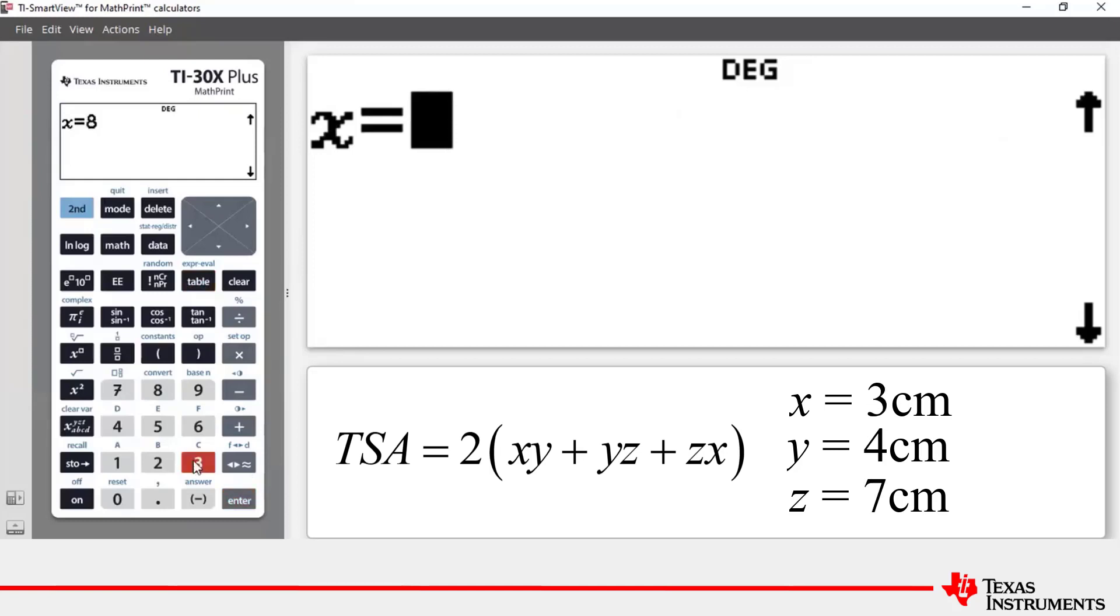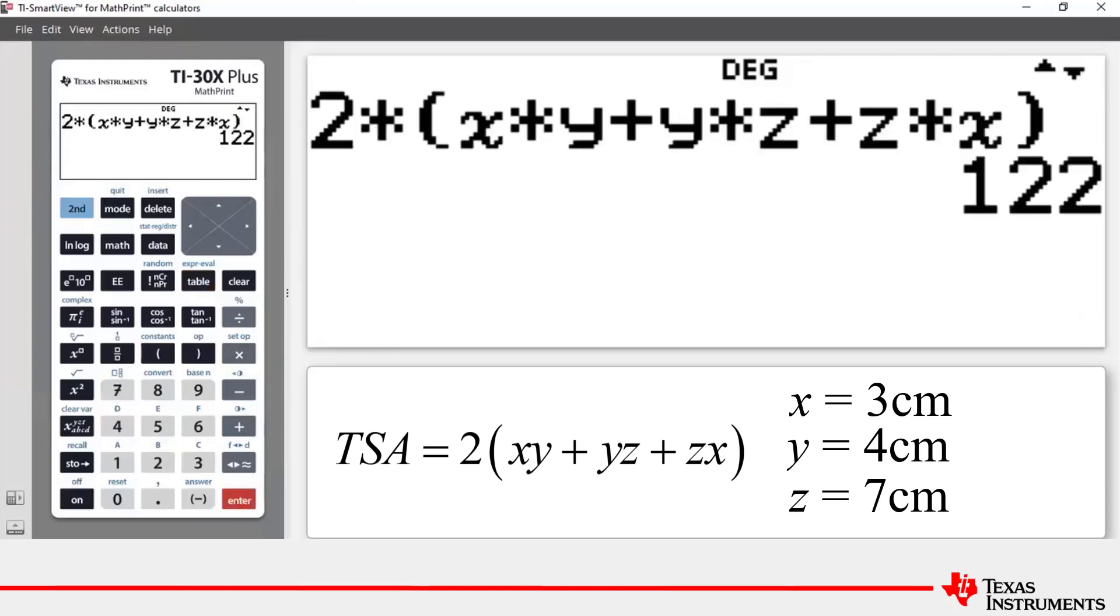We could say okay, x is 3, y is 4, and z is 7. Press enter and notice that it's performed that calculation. This shows you that the repeat calculations happen seamlessly.